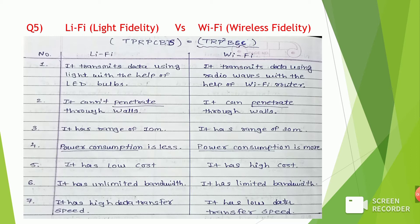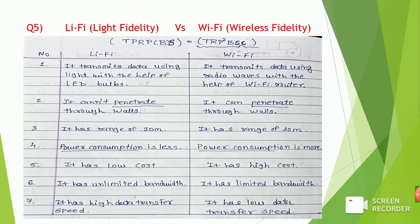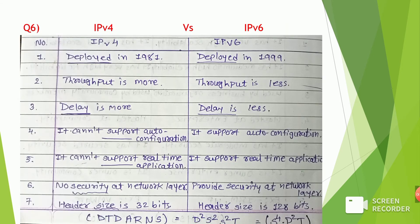How do you remember these in a short time? Here is a trick. You see here TRP²BSC — what is this? These are nothing but small words taken from each of these sentences: T for transmit, R for range, P for penetrate, P for power consumption, B for bandwidth, S for speed, and C for cost. Apply this method in your study and you can remember lots of points in less time.